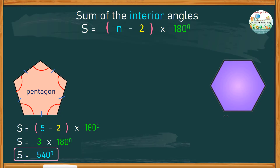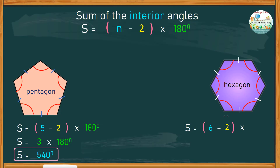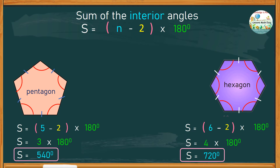Therefore, the sum of the interior angles of a pentagon is 540 degrees. For the second figure, this polygon has 6 equal sides and is called a hexagon. To find the sum of its interior angles: S equals 6 minus 2, giving a difference of 4, multiplied by 180 degrees, which gives a product of 720 degrees. Therefore, the sum of the interior angles of a hexagon is 720 degrees.